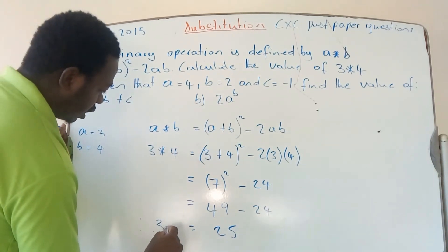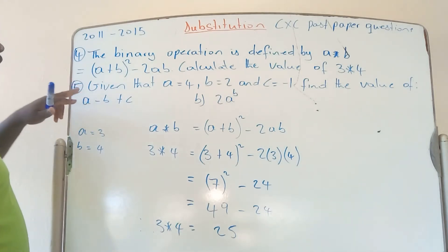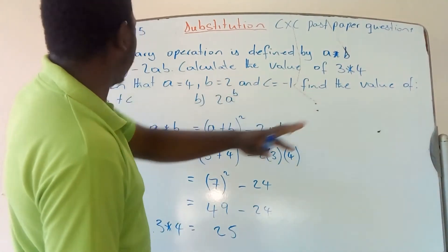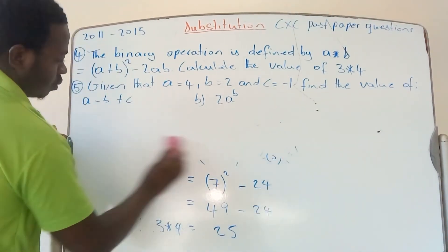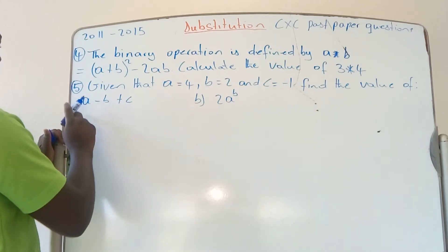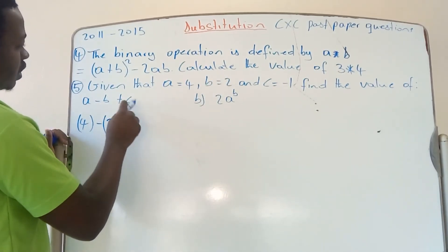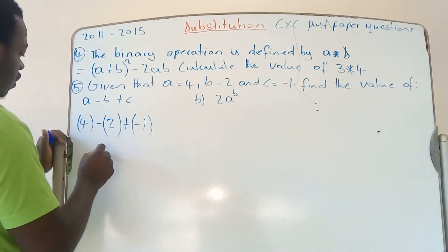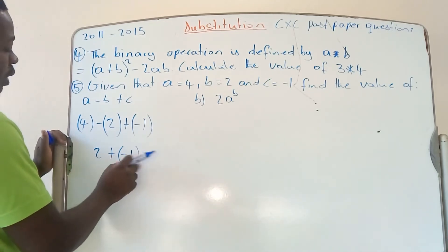Number 5: given a = 4, b = 2 and c = -1, find the value of a - b + c. Replacing: 4 - 2 + (-1). 4 minus 2 gives 2, and 2 + (-1) is the same as 2 - 1, which equals 1.